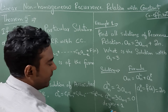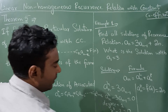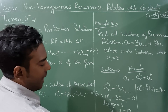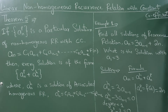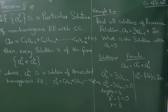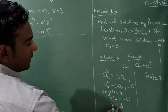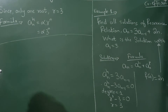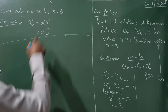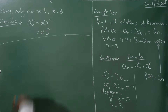Since it is degree 1, I will write r¹ − 3 = 0, so r = 3. Since there is only one root, r = 3, the formula for the associated homogeneous solution is aₙʰ = α · rⁿ. Substituting r = 3, we get aₙʰ = α · 3ⁿ.